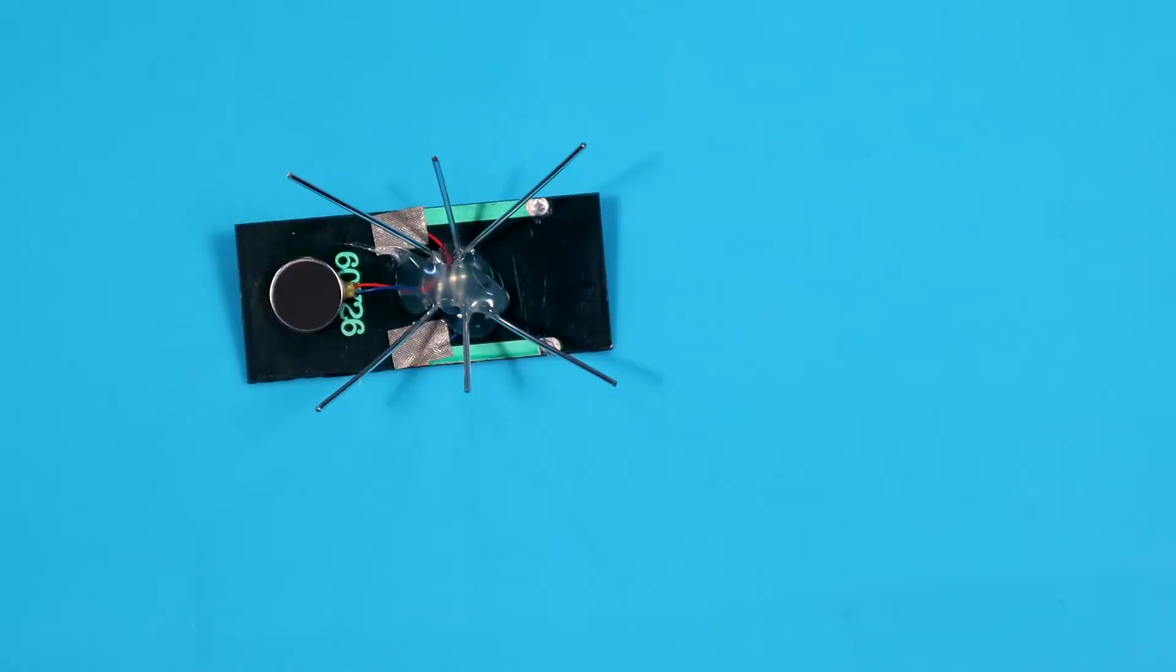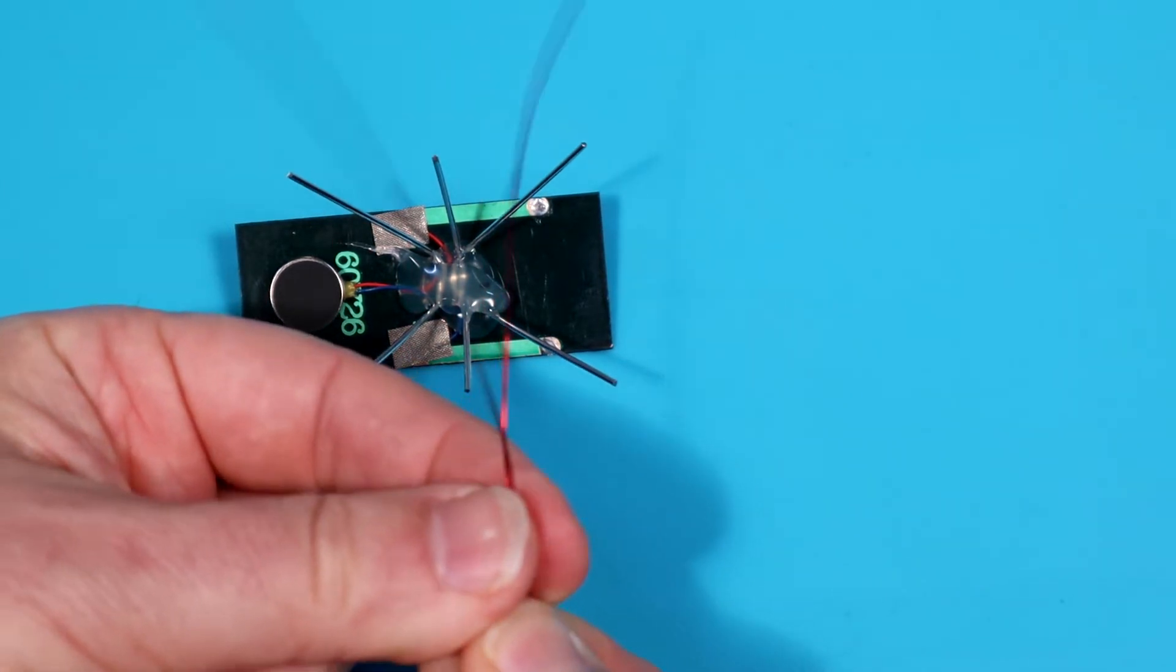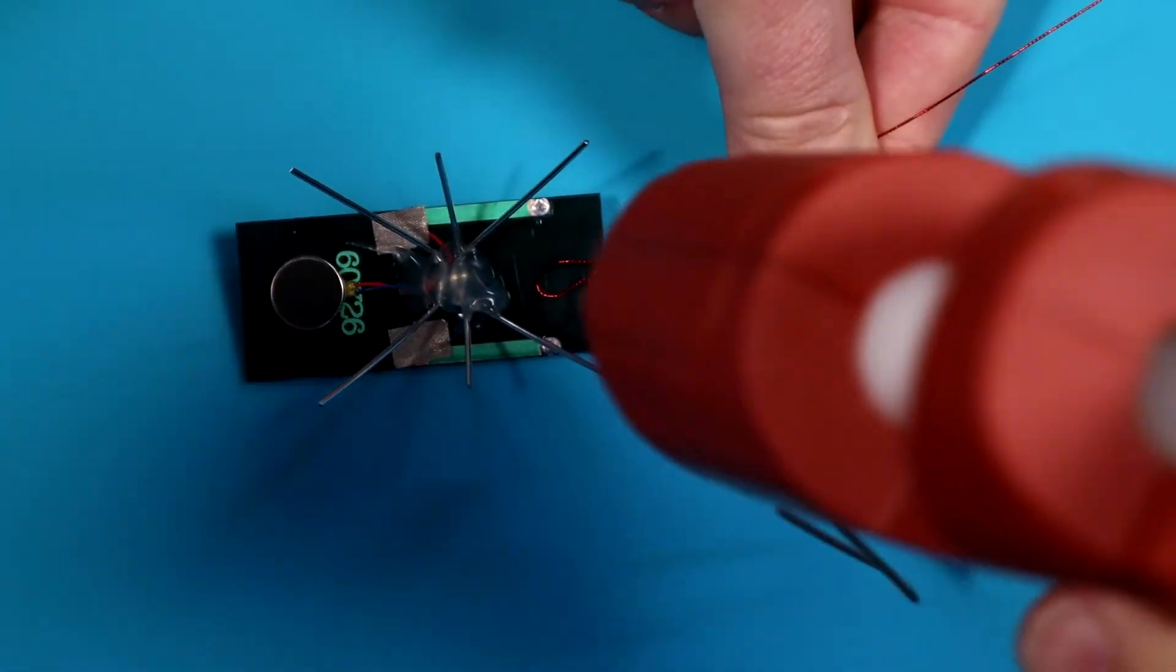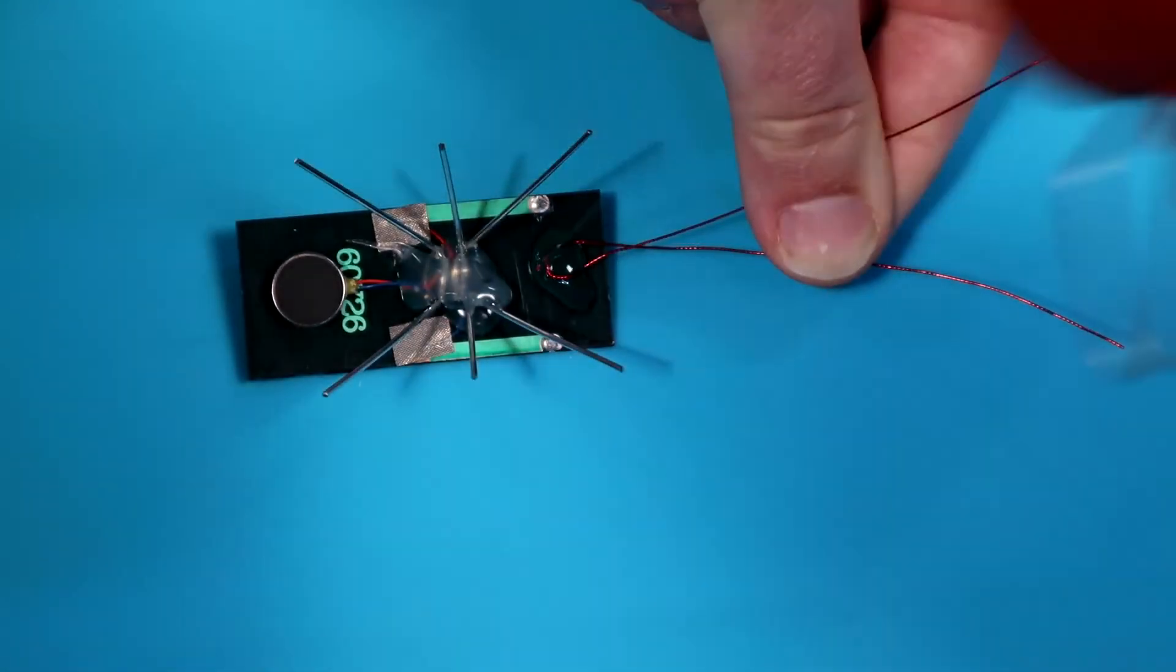We'll give it an antenna. First, take the thin magnet wire and fold it in half. Place part of the wire in the front middle of the cockroach and secure it with a drop of hot glue.